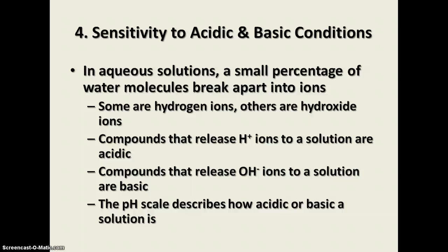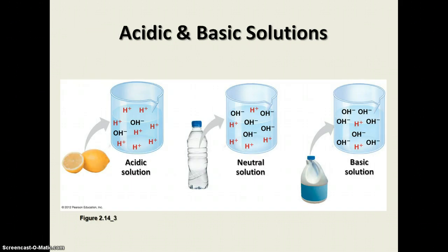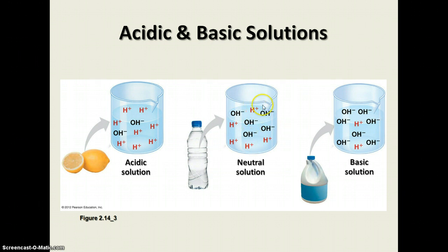Some compounds dissolved in water that release hydrogen ions into the solution are called acids — they are acidic. Compounds that release hydroxide ions to a solution are called basic. The pH scale is what we use to describe how basic or acidic a solution is. If it's just water, you'll have an equal number of hydrogen and hydroxide ions, so that's a neutral solution. A solution with more hydrogen ions than hydroxide ions is acidic — for example, lemon juice produces more hydrogen ions than hydroxide ions.